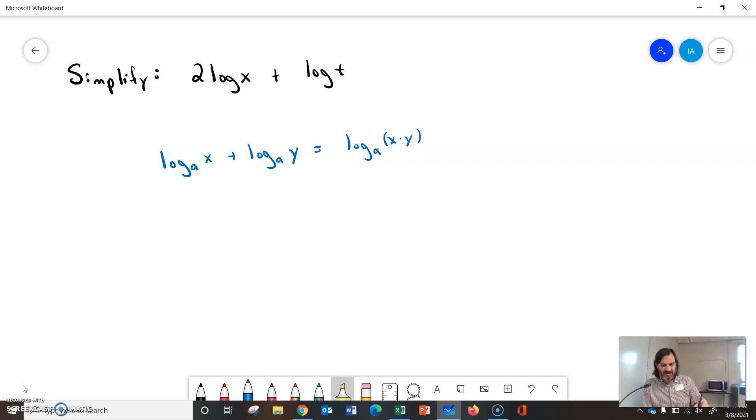The problem with this is out front, in front of these logarithms, there's nothing written. So it's understood that there's a 1 in front of them, whereas our first log up here has a 2 in front of it.